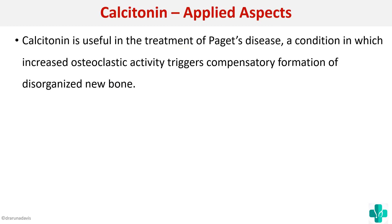For applied aspects related to calcitonin, it is used for the treatment of Paget's disease. Paget's disease is a condition in which there is increased osteoclastic activity, so calcitonin can be used to decrease that osteoclastic activity.